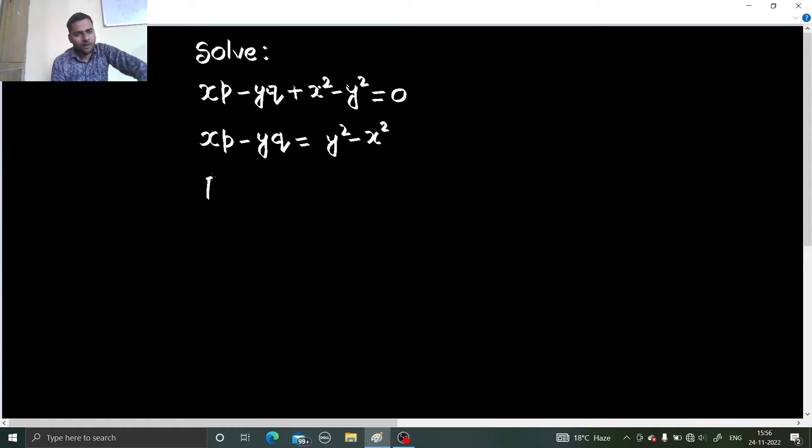Now, this is of the form Pp plus Qq equals to R, which is the Lagrange's form. So we write the auxiliary equation, which is dx by P equals to dy by Q equals to dz by R.